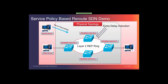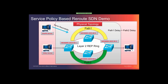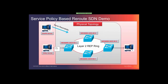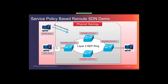REP switchover will occur if the backup path has a lower delay than the primary path. After switchover, the video quality will improve again. The app will continue to monitor the network quality of critical paths using Y.1731 two-way delay measurement and 1PK APIs to query those statistics.